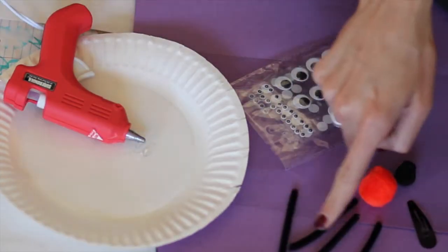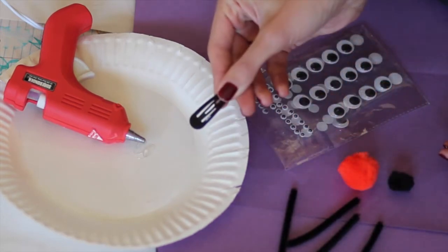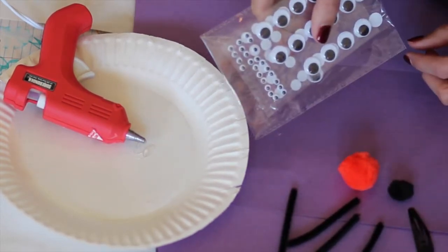So we're going to need a glue gun, some pipe cleaners, two little puff balls, and one of your little snappy clips, as well as some little eyeballs.